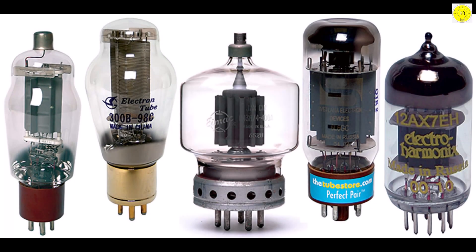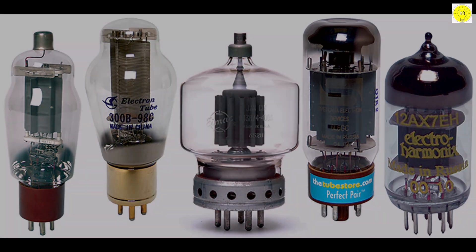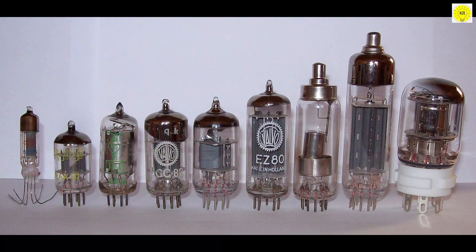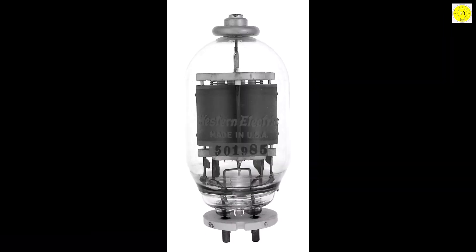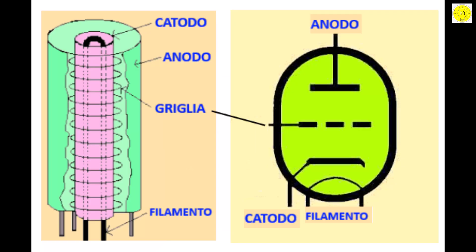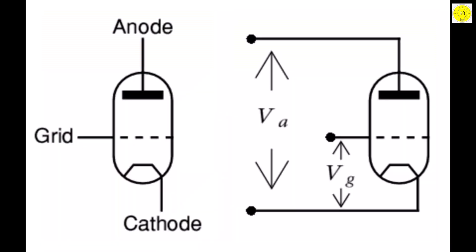Types of Vacuum Tubes: There are several types of vacuum tubes, each designed for specific purposes. The triode vacuum tube has three main components: a cathode, an anode, and a control grid. It was one of the earliest vacuum tube designs and was widely used for amplification and signal processing.